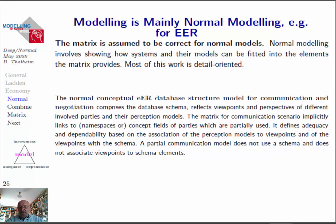We have some kind of negotiation or communication process to communicate what has been developed so far, mainly on the basis of the model. That means normal modeling involves showing how systems and their models can be fitted into elements provided especially by the prior decisions. Normal modeling is somehow detail-oriented. We can do it for normalization, for conceptual modeling — that means concepts from concept spaces. Description is nothing else as we are describing what has been given in our perception and domain situation.